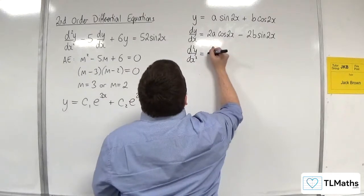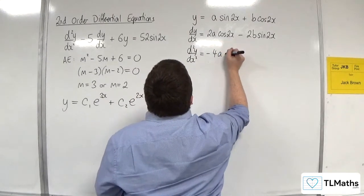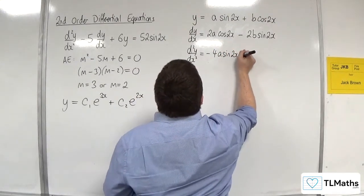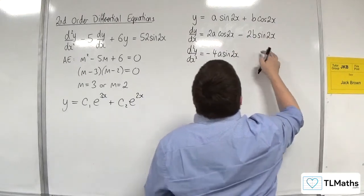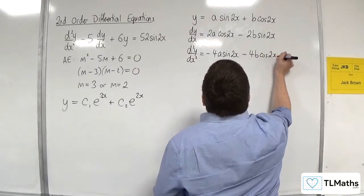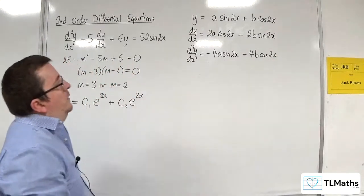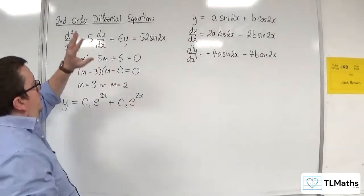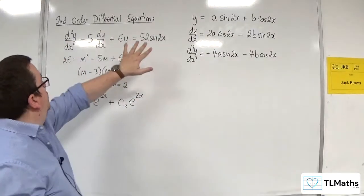So, we're going to get minus 4a sine of 2x. Then from here, minus 4b cosine of 2x. We now need to substitute those terms into the differential equation.